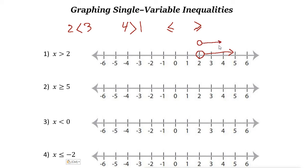When you move to the right side on the number line, you get bigger numbers — for example, 3 is bigger than 2, 4 is bigger than 3, and so on. So you graph it by placing an open circle at 2 and drawing an arrow to the right. If the sign is strictly greater than or strictly less than, we always use an open circle.